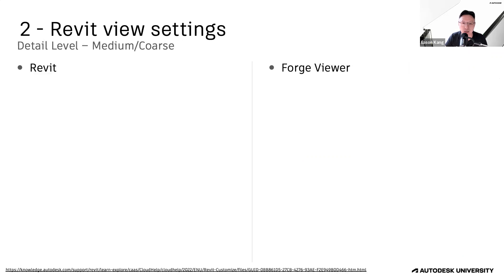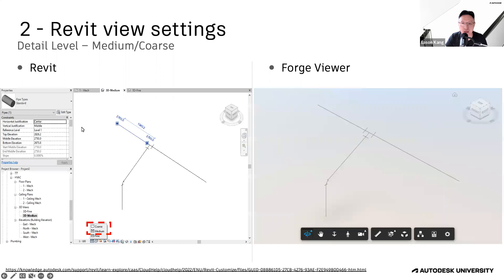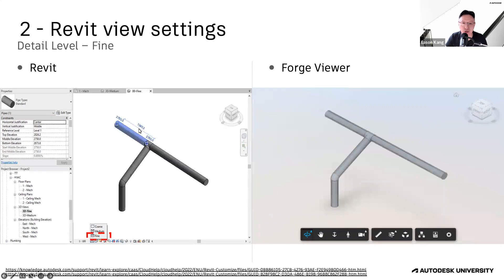Here is another setting called Detail Level. In Revit, we can change this setting to control how Revit presents the element geometry details. Here we can see the coarse level. If we change the detail level to Fine, we can see the pipe is shown as a solid — quite a noticeable difference.